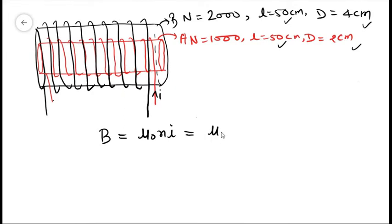And this will be μ₀, where N is the number of turns per unit length. So this will turn out to be NA, the total number of turns in solenoid A, divided by the length of solenoid A, into I.